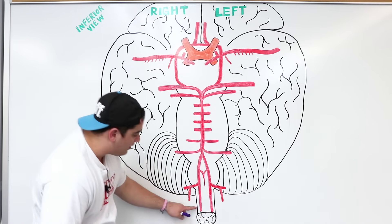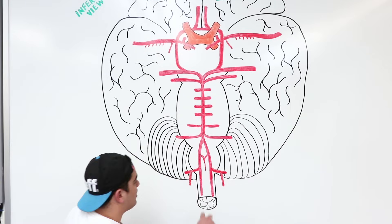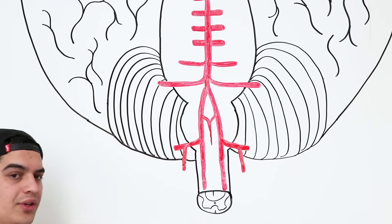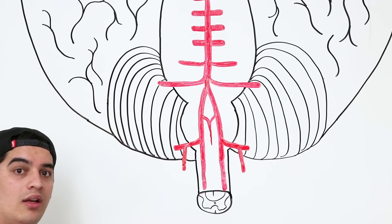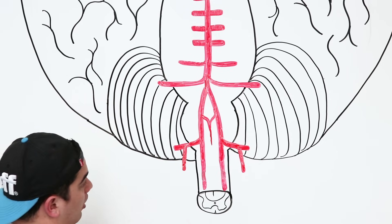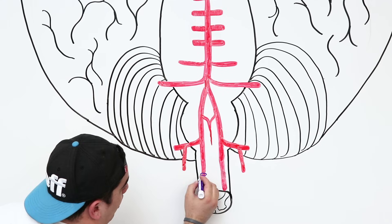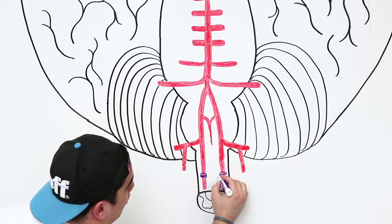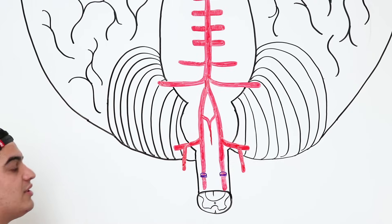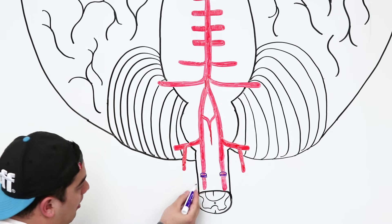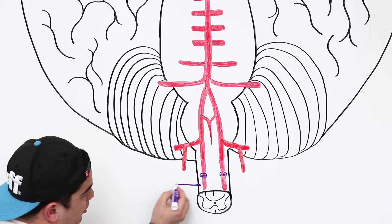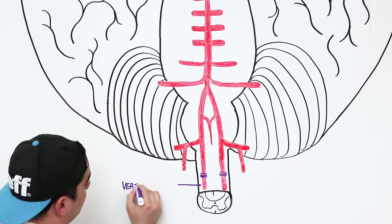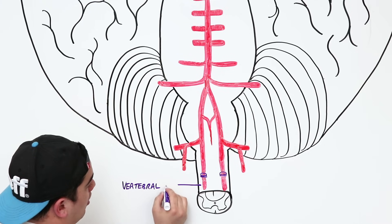First, we have the vertebral arteries on either side. These are supplied from the subclavian arteries. The vertebral arteries are interesting because they actually run up through holes in the cervical vertebrae called the transverse foramina.